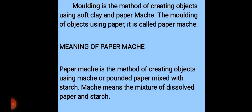We've learned that molding is the method of creating objects using soft clay or paper mache. The method of creating beautiful objects. You can create a cup, a bowl, a tray, a face, someone's face. You can create a fish, different kinds of objects with your clay or with your paper mache. The molding of objects using paper is called paper mache.